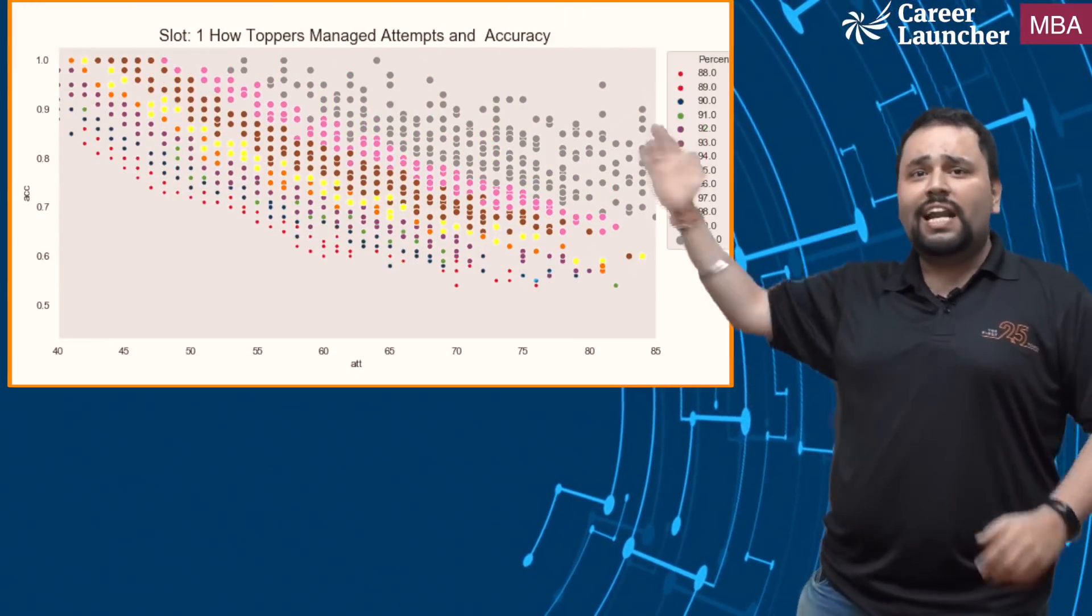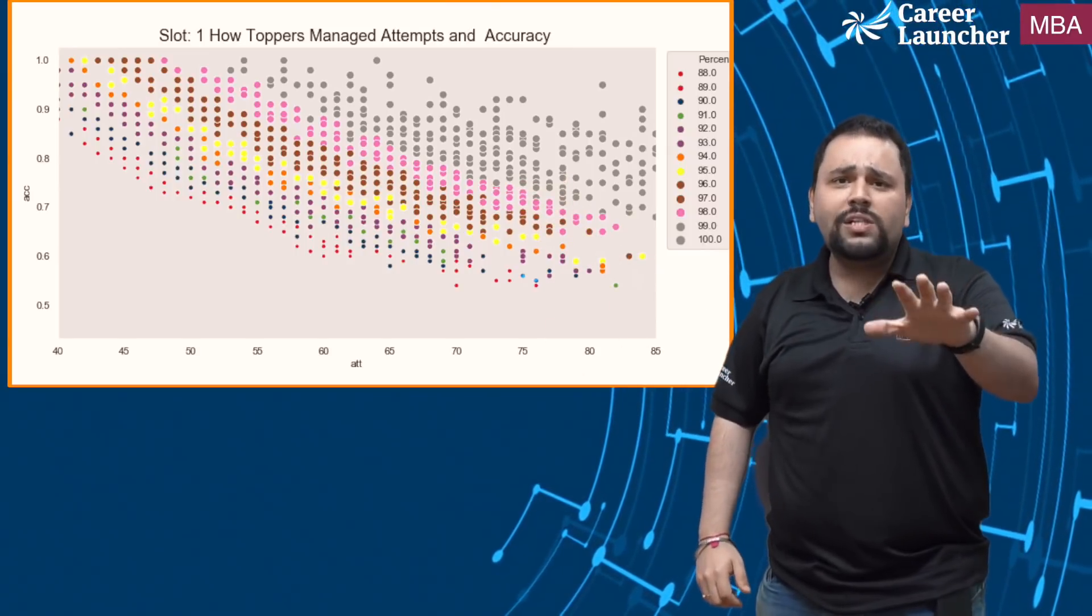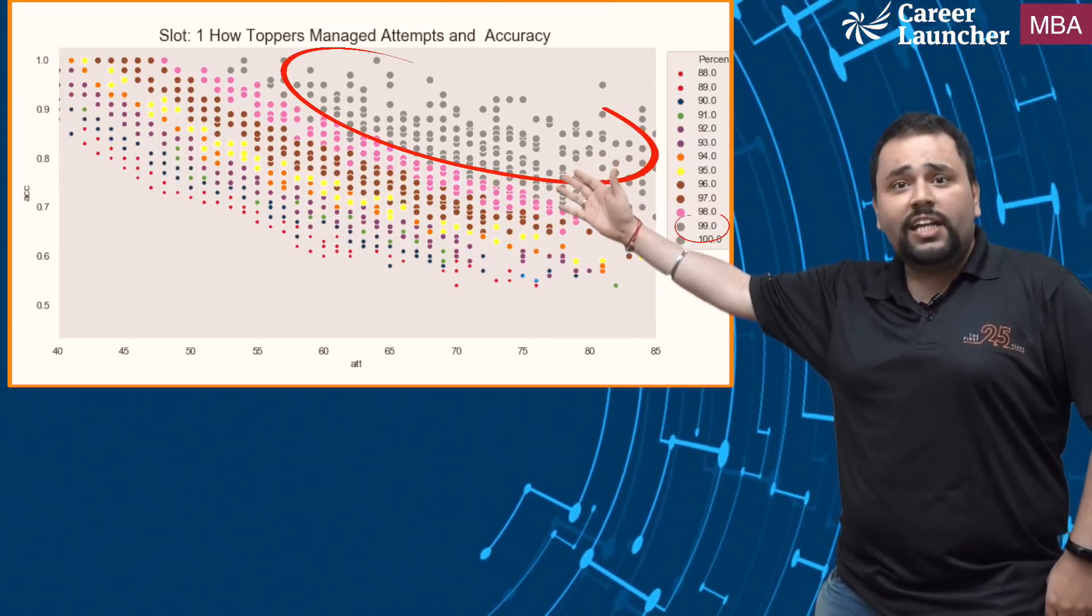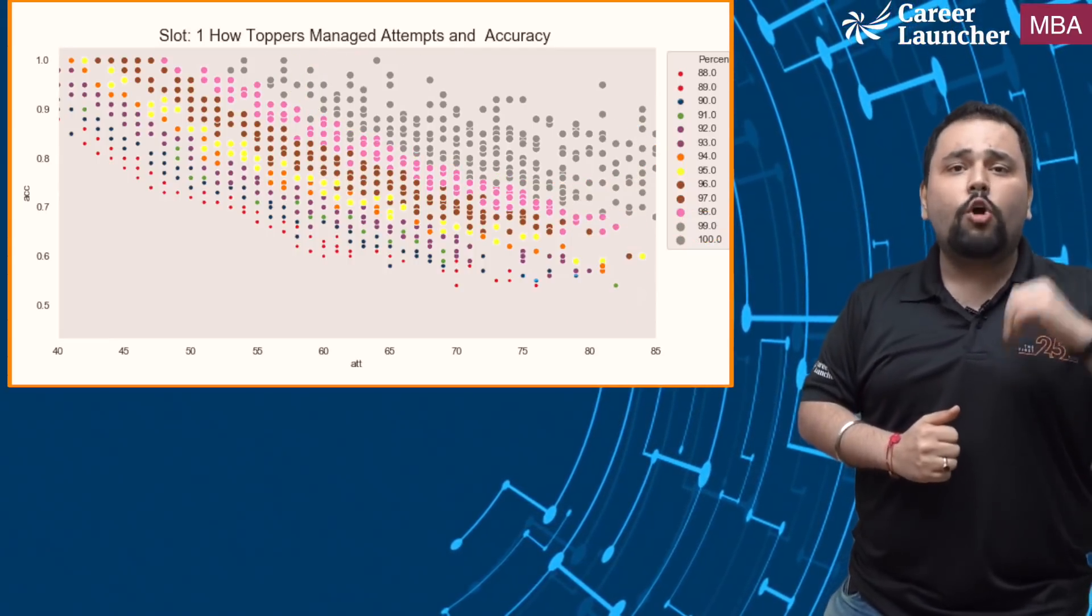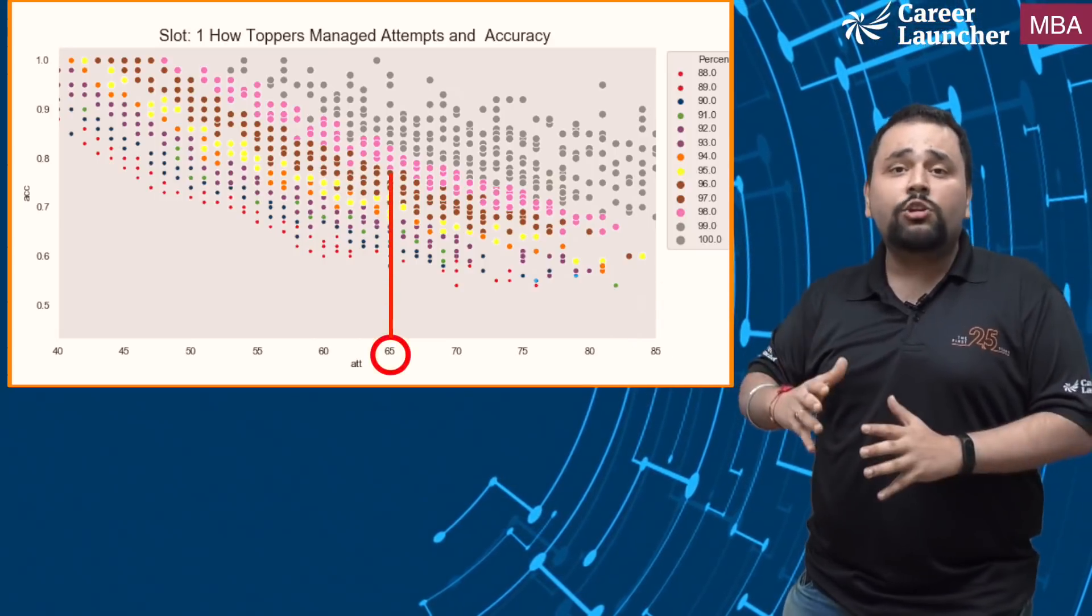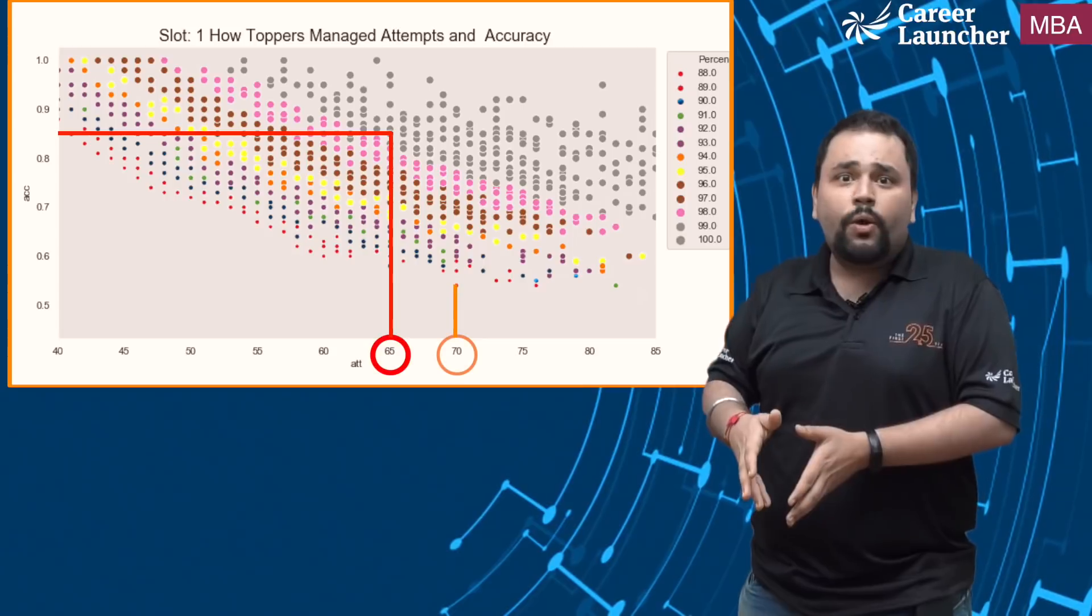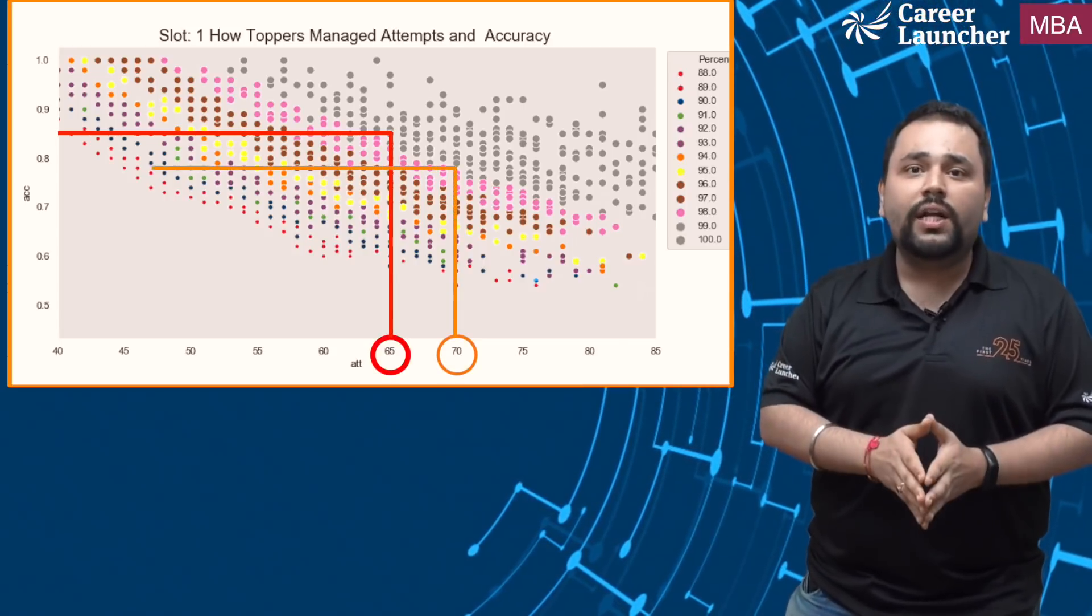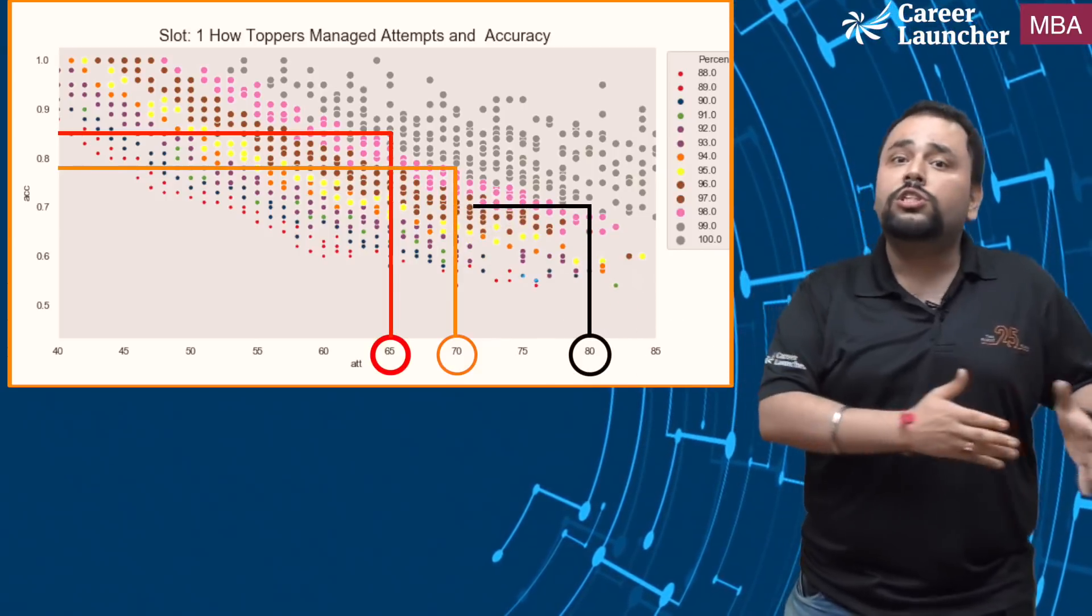So at the outset let me start off with a graph which maps attempt to accuracy. So let's start off with the CAT 2019 slot 1 attempt to accuracy graph. If you have a look at this you will see that in order to score a 99 percentile there are different combinations that are possible. A student could have gone ahead and attempted 65 questions at an accuracy close to 83 to 85 percent or 70 questions at a lower accuracy of say 78 to 80 percent or probably even 80 questions at an accuracy closer to 70 percent.